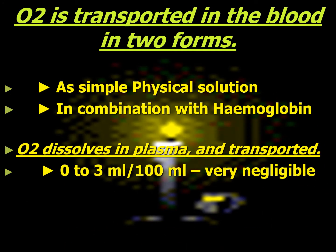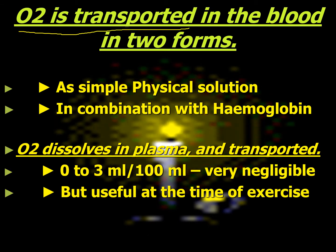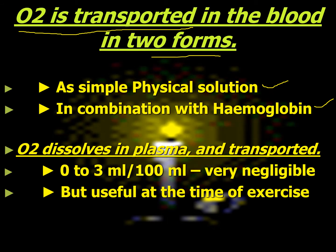Oxygen is transported in the blood in two forms: as simple physical solution and in combination with hemoglobin. First, we are going to see about simple physical solution — the oxygen dissolves in water of plasma and is transported in physical form. The amount of oxygen transported in this form is very negligible: only 0.3 ml per 100 ml, which is about only 3% of total oxygen in blood.